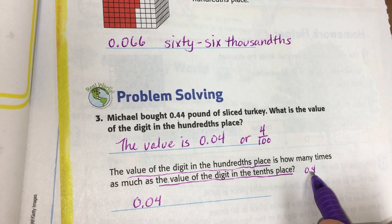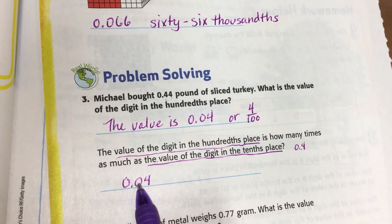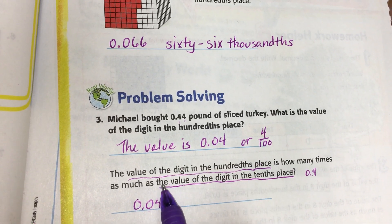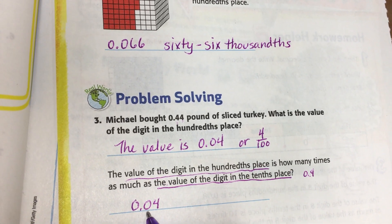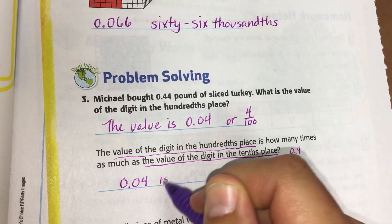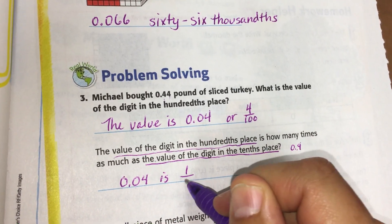So to answer this question, since this is smaller than that one and it's one place over, the value of the digit in the tenths place. So four hundredths is one tenths.